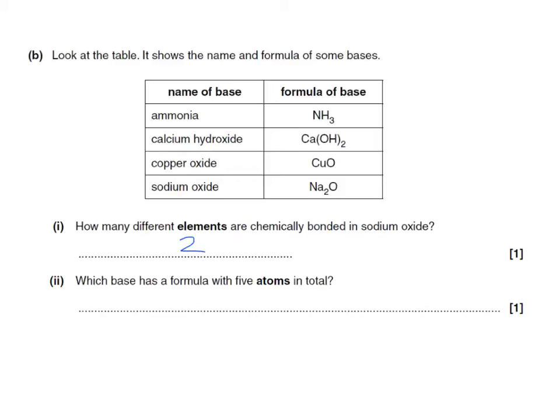And which base has a formula with 5 atoms in total? In the first one we've got 1 nitrogen and 3 hydrogens. That makes a total of 4. In the second one we've got 1 calcium, 2 oxygens and 2 hydrogens. That looks like it's going to be 5. Let's just check the others. Copper oxide, just 2. A Cu and an O. And the sodium oxide, 2 Na's and an O. So the answer here is calcium hydroxide.